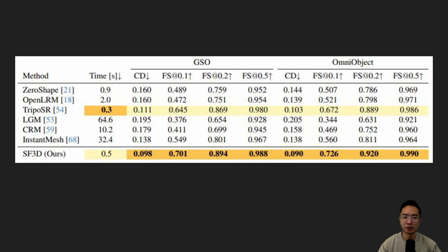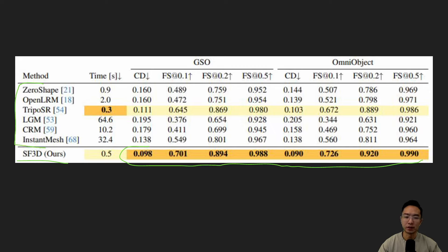Looking at the overall performance of the different models, you can see that SF3D is hitting F-score numbers like 0.7, 0.8, and 0.9. Overall the numbers pretty much stand out among the rest.